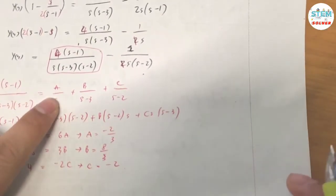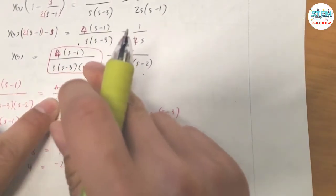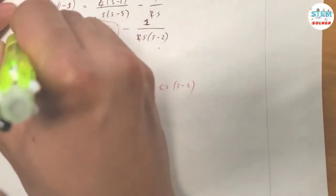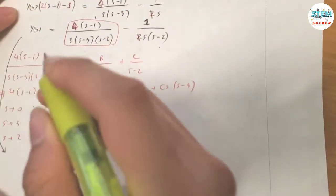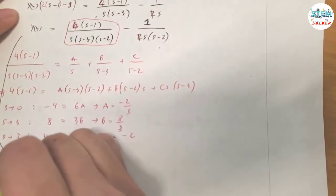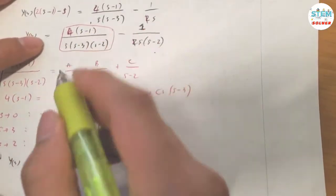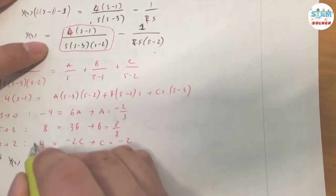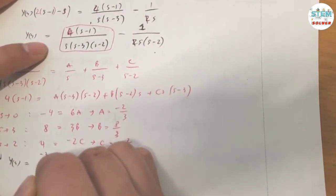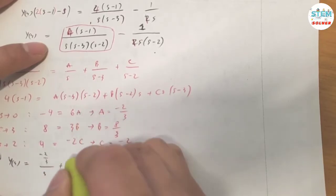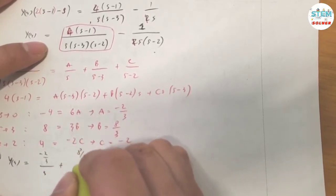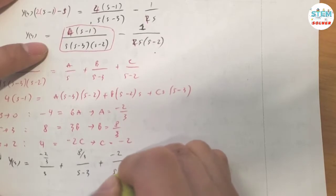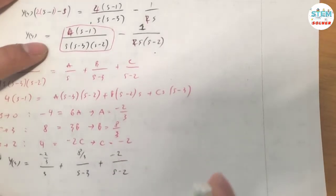These are the values for A, B, and C from the decomposition. That expression becomes negative two-thirds over S, plus four-thirds over (S minus 3), plus negative two over (S minus 2).